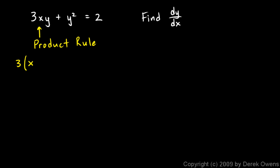The first is x, and the derivative of the second is the derivative of y — that's dy/dx, but I'll just write it as y prime. It means the same thing, just a more succinct notation. So the first times the derivative of the second, plus the second (which is y) times the derivative of the first, and the derivative of x is just 1. Then I have plus the derivative of my second term, and the derivative of y squared is 2y times y prime by the chain rule.